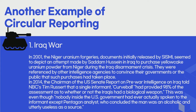Next, I will introduce another example of circular reporting. First is the Iraq War. In 2001, the Niger-Uranium forgeries — documents initially released by SISMI — seemed to depict an attempt made by Saddam Hussein in Iraq to purchase yellow cake uranium powder from Niger during the Iraq disarmament crisis.